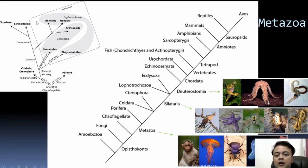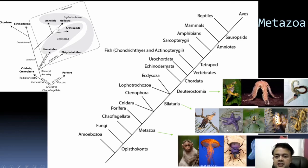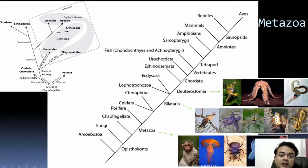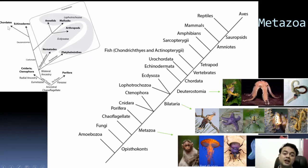Starting from ancestral choanoflagellates: Porifera and Cnidaria, Ctenophora, then a polytomy where Platyhelminthes, nematodes, and then annelids, mollusks, and arthropods diverge. Arthropods and nematodes together form Ecdysozoa because both can shed their cuticle. Platyhelminthes and annelids together form Lophotrochozoa. Echinoderms and chordates complete the deuterostome lineage. This is how the animal classification system works.